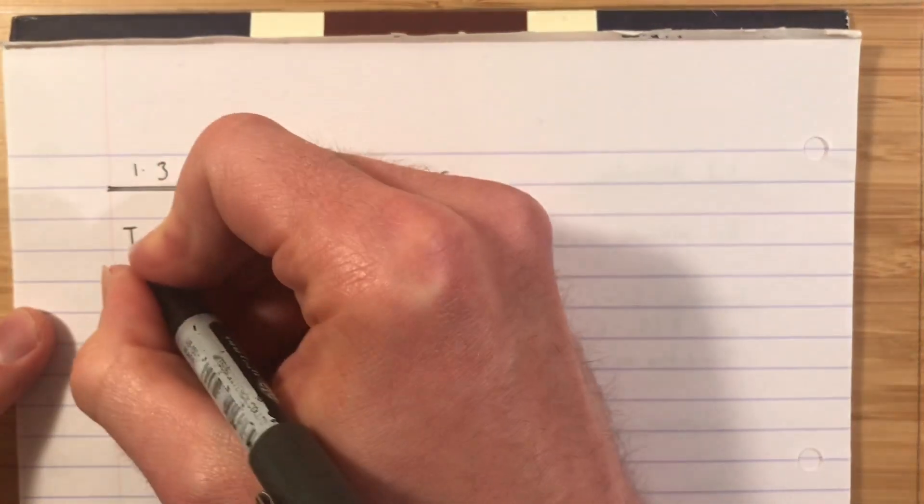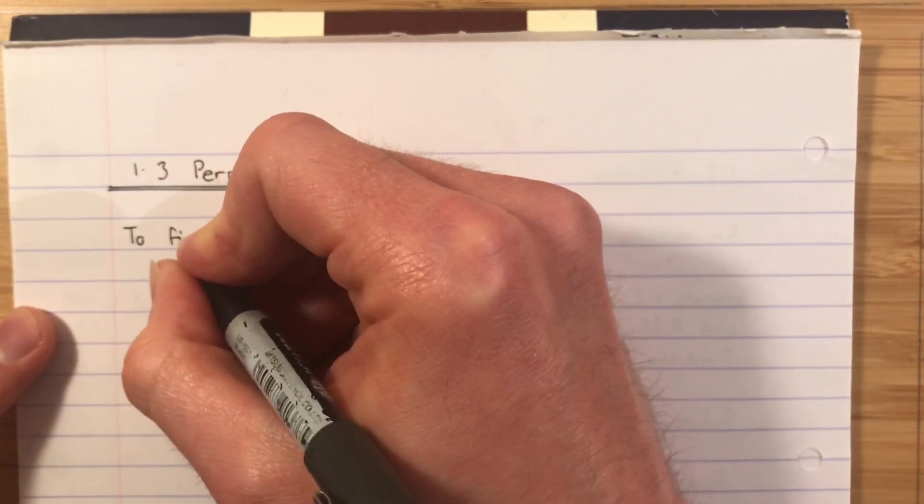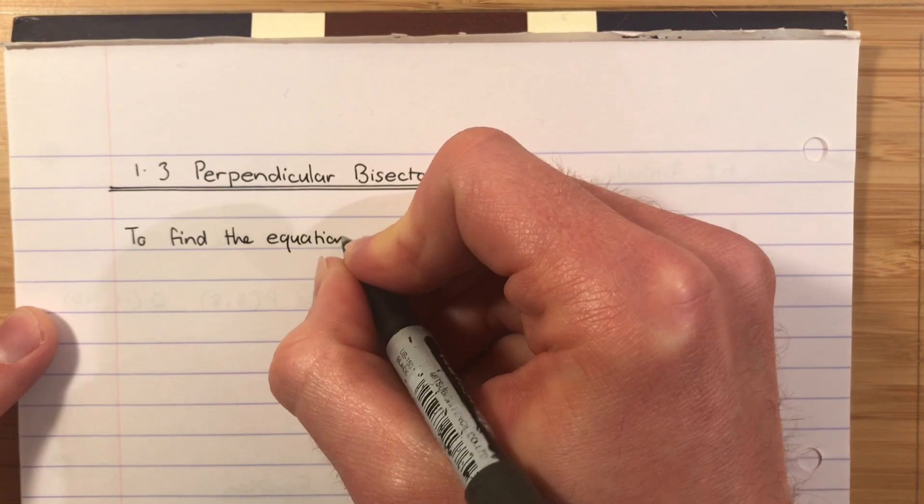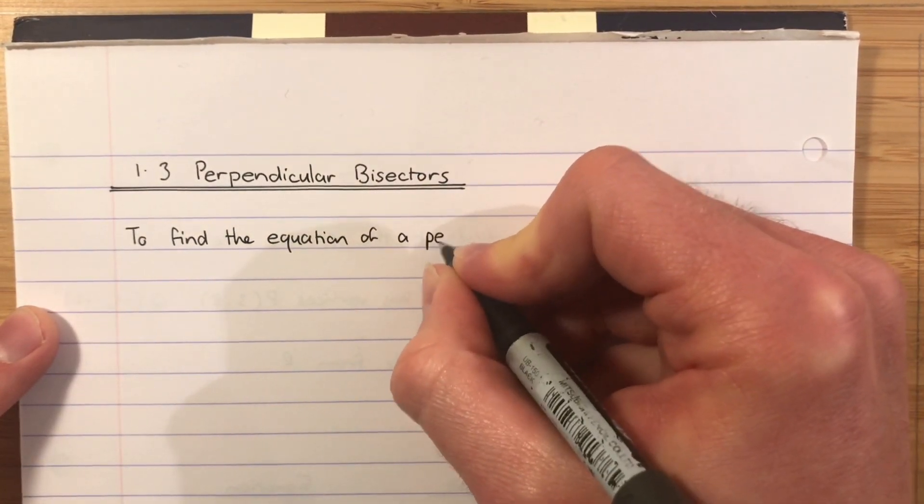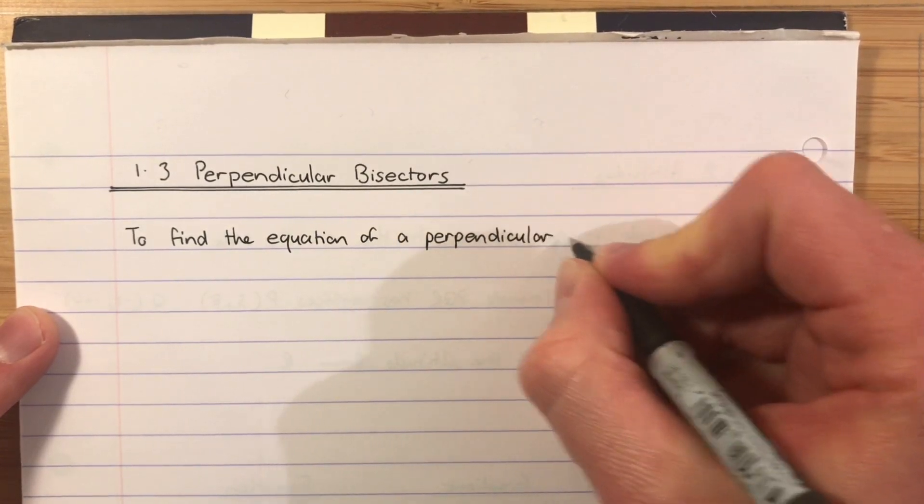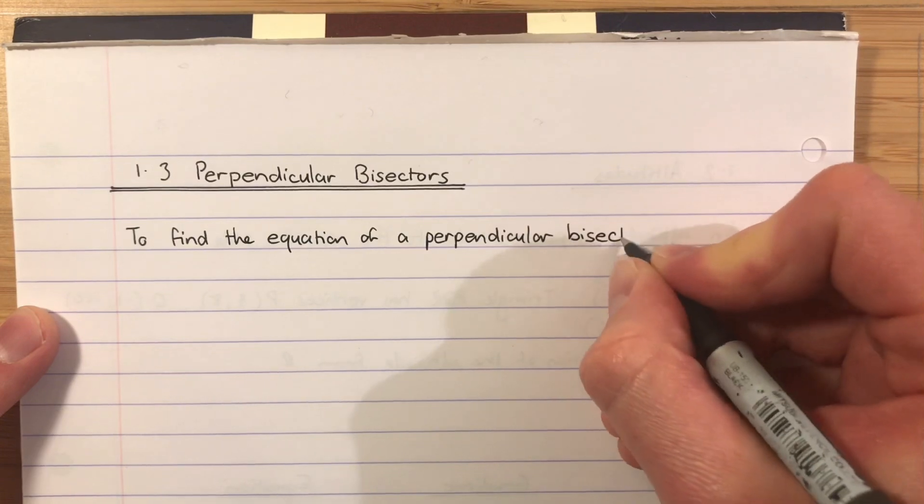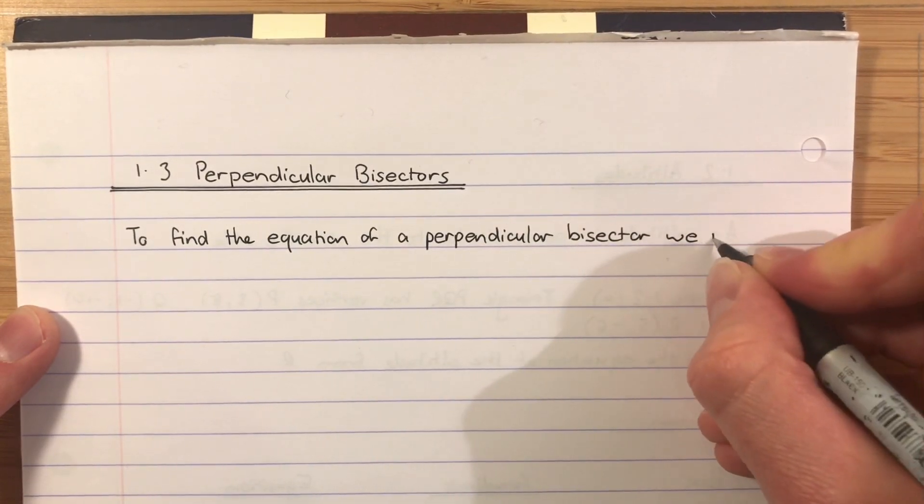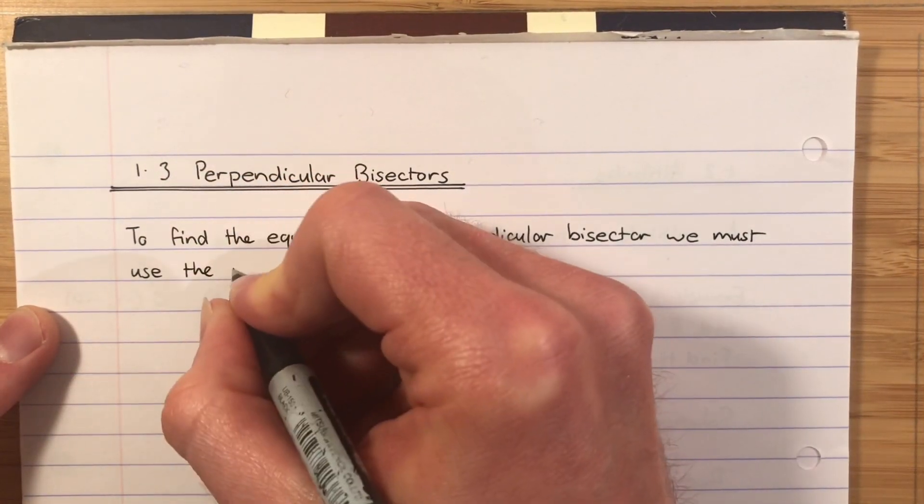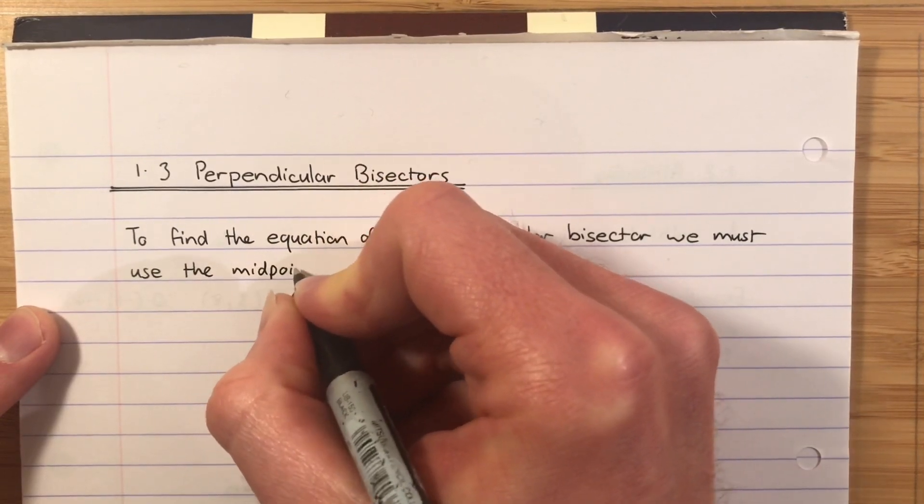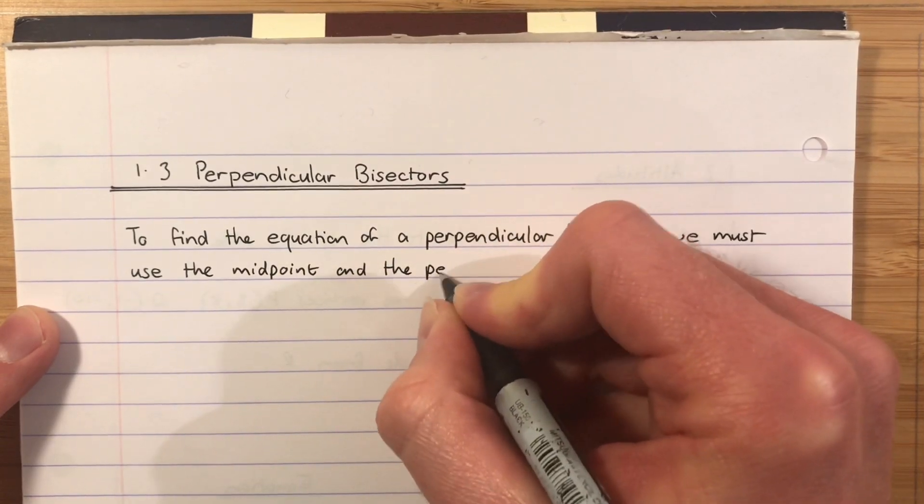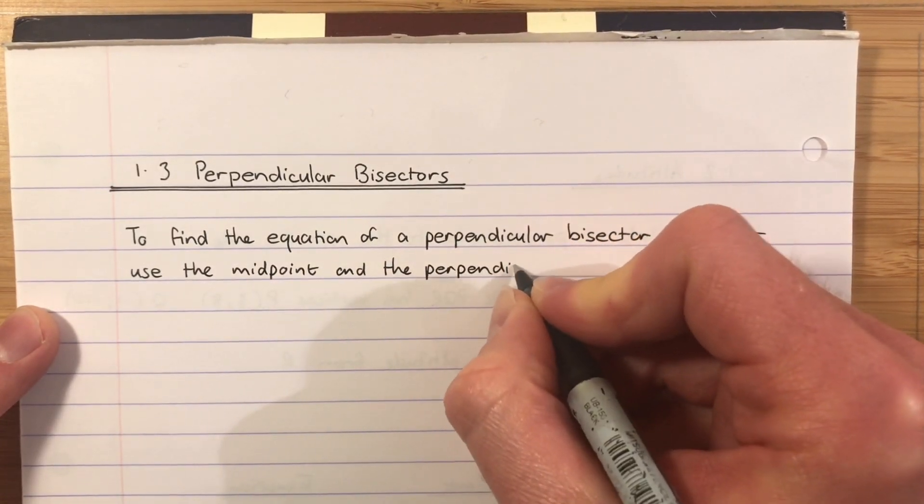So we will say, to find the equation of a perpendicular bisector, we must use the midpoint and the perpendicular gradient.